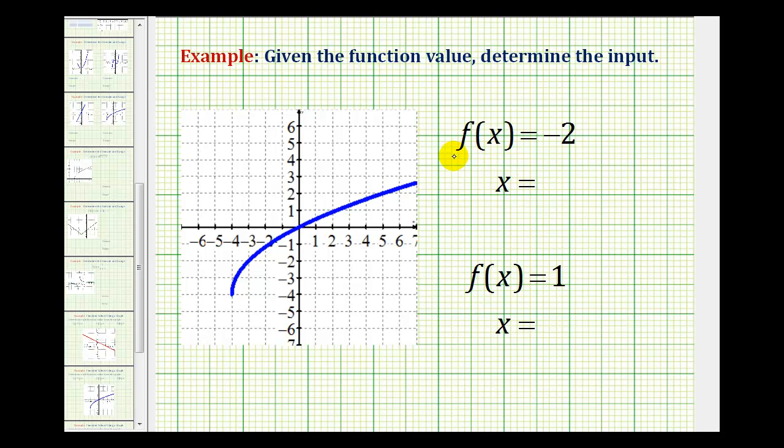For this first example, we're given that f of x equals negative two, and we're asked to determine what x would be. So negative two is our output. Remember, the output is a y value, so this tells us that y is equal to negative two.